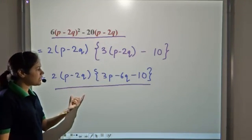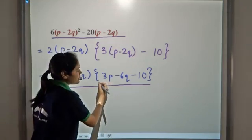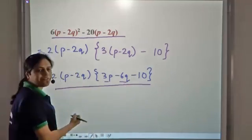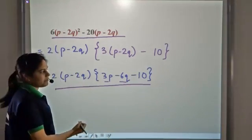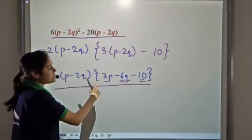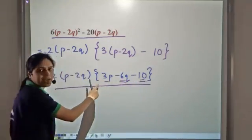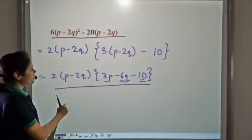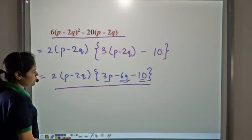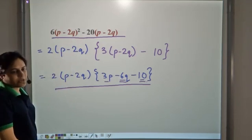This is the factorized form and we cannot factorize it further — that is, we cannot break it down into simpler factors. If we consider this factor, these two terms have 3 in common and these two terms have 2 in common, but all three terms do not share a common factor. So we cannot reduce it to a simpler form. This is the final factorized form of the expression.